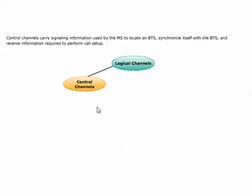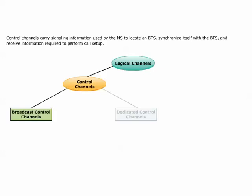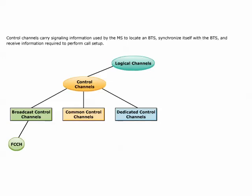Control channels carry signaling information used by the MS to locate a BTS, synchronize itself with the BTS, and receive information required to perform call setup. Broadcast control, dedicated control, and common control are the three categories of control channels. All broadcast channels, BCH, are transmitted point to multipoint over the downlink, and consist of three types. Frequency correction channel, FCCH, provides frequency correction information. Synchronization channel, SCH, contains the base station identity code and the TDMA frame number used for synchronization. Broadcast control channel, BCCH, is used to broadcast general information to all mobile stations.